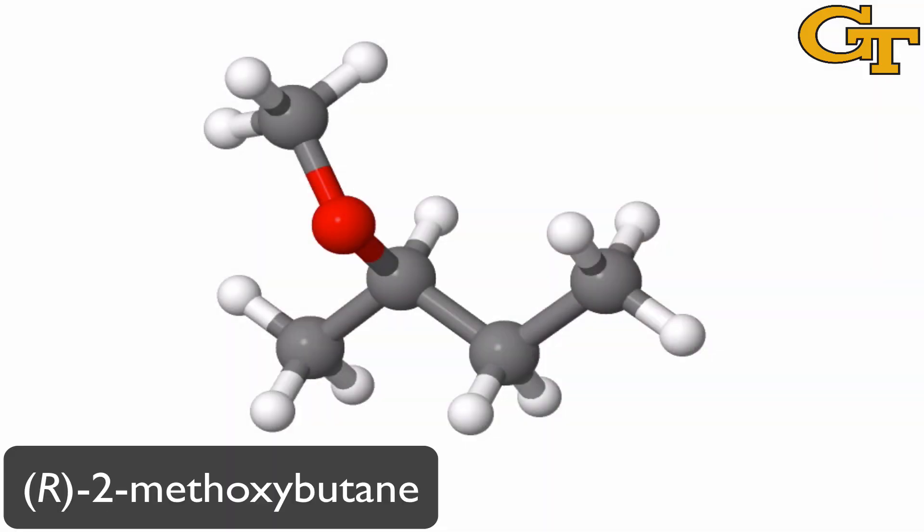A big part of the motivation for organic chemical nomenclature is that the cost of printing the structure of an organic molecule can be prohibitive. The structure you're seeing here in three dimensions is R-2-methoxybutane, which has a line or Lewis structure that looks like this.